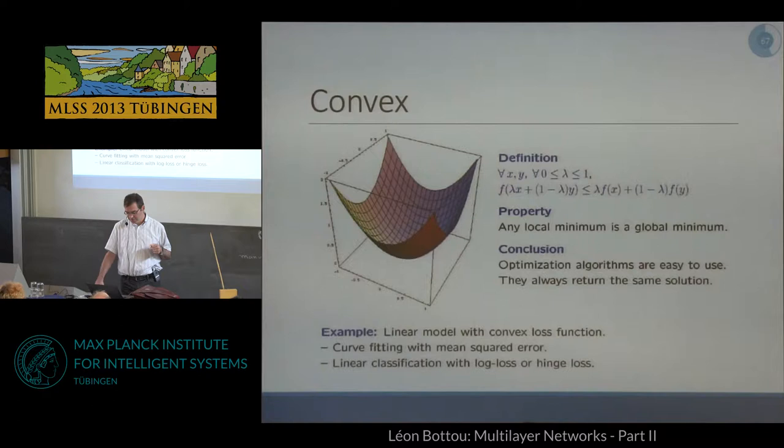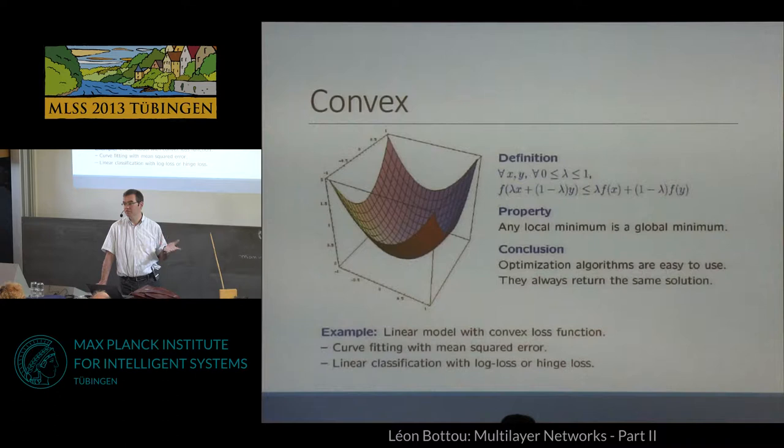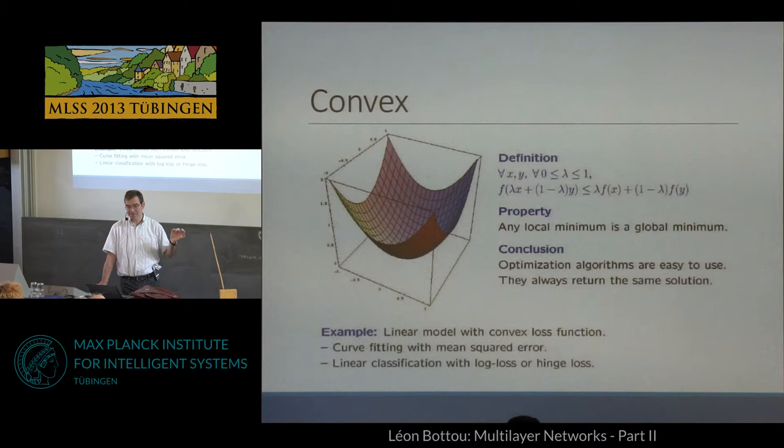The first thing is that optimization in the literature — 90% and it's probably growing — is about convex optimization. Convex optimization is mathematically nice because any local minimum is a global minimum. Whenever you run your optimization again and again, it always returns the same result and you can know mathematically precisely what the result should be.